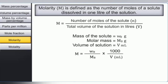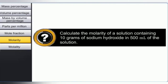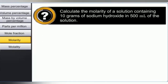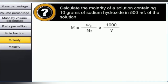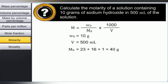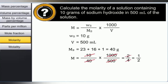Let us solve a numerical problem on molarity. Calculate the molarity of a solution containing 10 grams of sodium hydroxide in 500 mL of solution. Writing down the formula and listing the given variables: Wb equals 10 grams, V equals 500 mL, and the molar mass of sodium hydroxide is 40 grams per mol. Substituting the values in the formula and solving, we get M equal to 0.5 moles per litre.